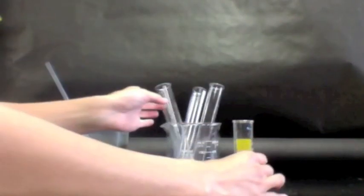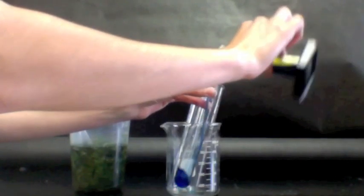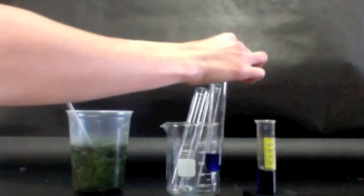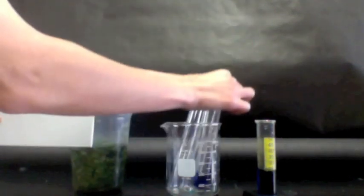The first thing we're going to do is just set up a control so that we can see what BTB looks like just by itself. There's a little bit in there. And we're going to just hold up something white behind it so that you can see the color. And that's going to serve as our control.